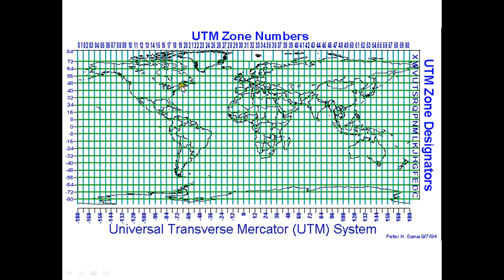These are the UTM zone numbers. For example, I am from Bangladesh, so if I want to project using Universal Transverse Mercator, I have to work with either zone 45 or 46. If you are from California in the United States, you define zone 10. If you are from Newark, you define zone 18. For Nepal, there are two zones — 44 and 45 — depending on which part. For Sri Lanka, you define zone 44.